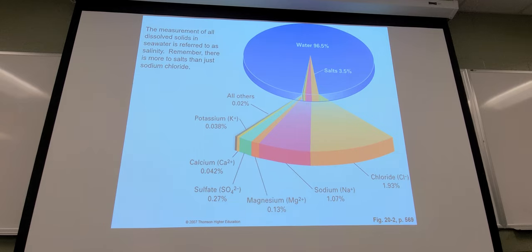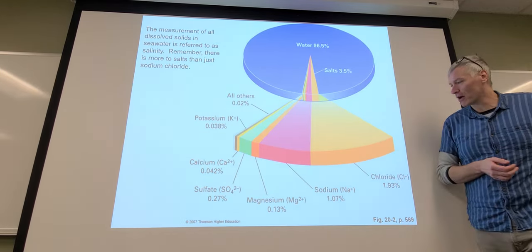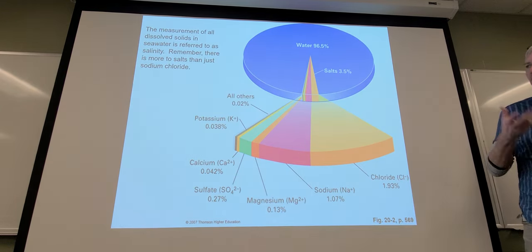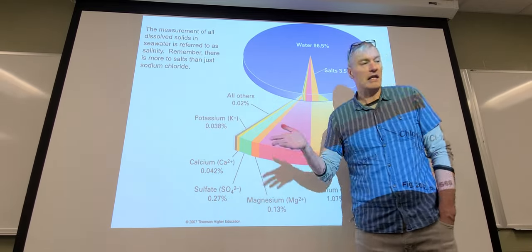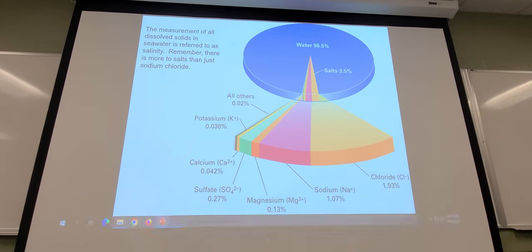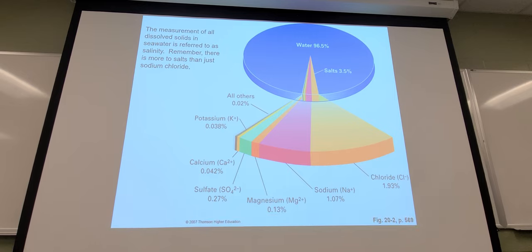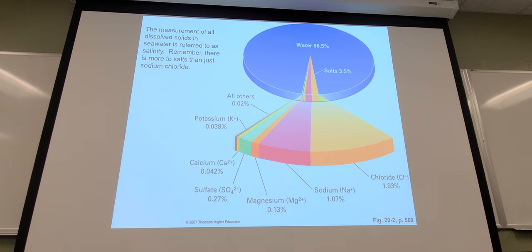When we talk about the ocean being salt water, salts aren't just sodium chloride — salts refer to everything dissolved in the ocean. Water dissolves everything. If you had a net at the nano scale, you could harvest gold out of the ocean because there are atoms of gold dissolved in it. Everything that exists is dissolved in the ocean at some microscopic level.